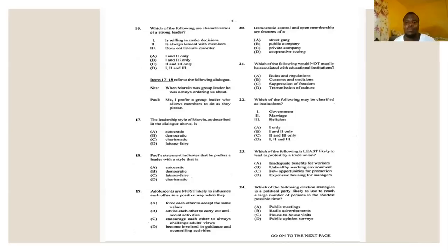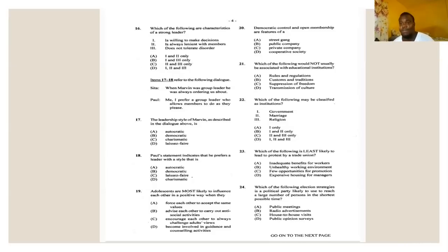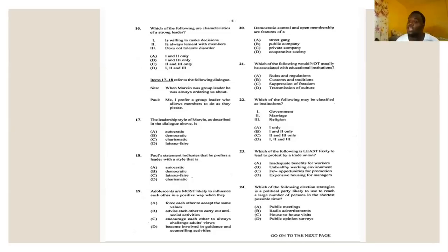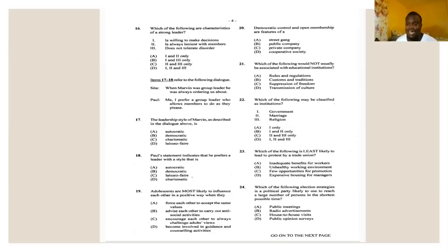Number twenty-three says: which of the following is least likely to lead to protest by a trade union? A: inadequate benefits for workers, B: unhealthy working conditions — both are workers' interests. C: expensive housing for managers — that might be of interest to some workers, but not all, and only to a lesser extent. The answer for number twenty-three is D — expensive housing for managers is least likely to lead to a trade union protest.